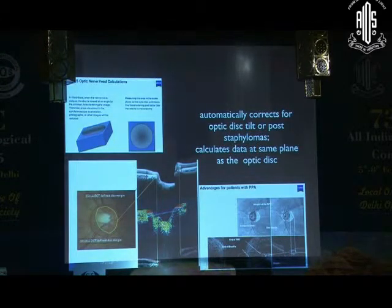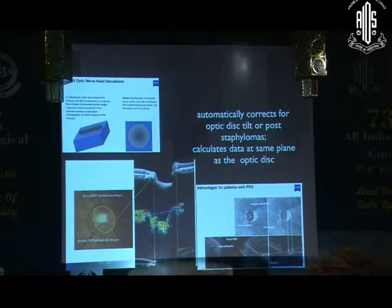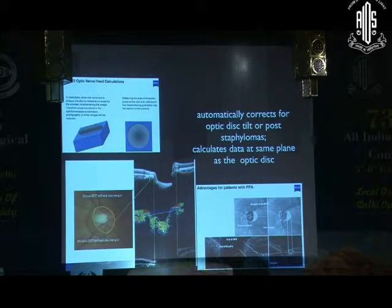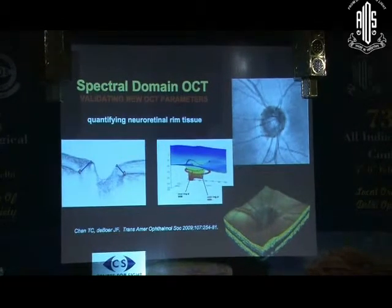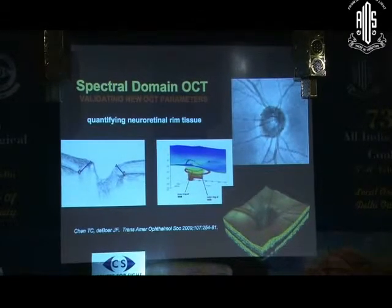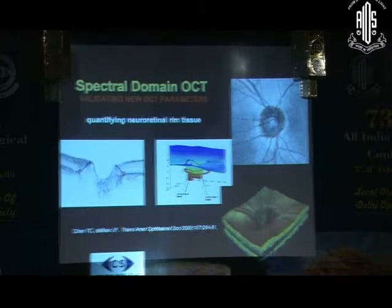It is also claimed by Cirrus that they autocorrect for tough anatomic situations like peripapillary atrophy and tilted discs, which frequently coexist in glaucoma patients. The spectral domain marks the edge of the disc as the edge of the RPE in OptiView and the edge of Bruch's membrane in Cirrus, and thereby it outlines the optic disc.